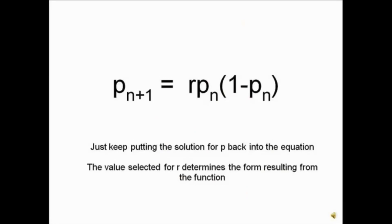This simple equation is the foundation of chaos theory. But the secrets of this equation could not be discovered until the advent of the microprocessor. This equation works by starting with a value for p, then solving the equation, jotting down the answer, then putting that value for p back in the equation.